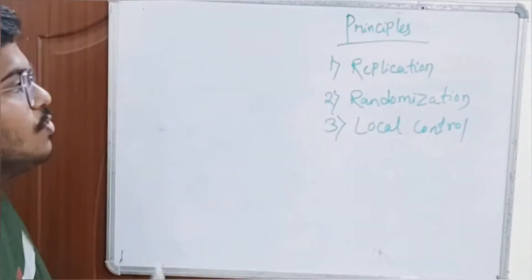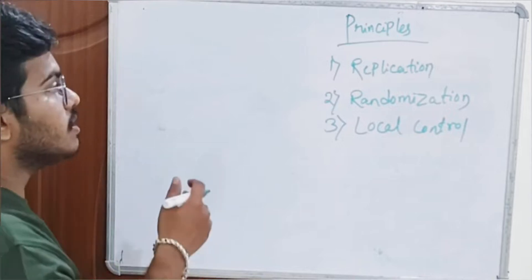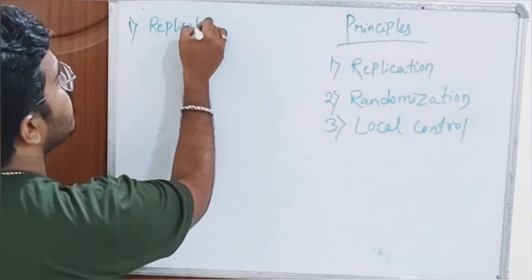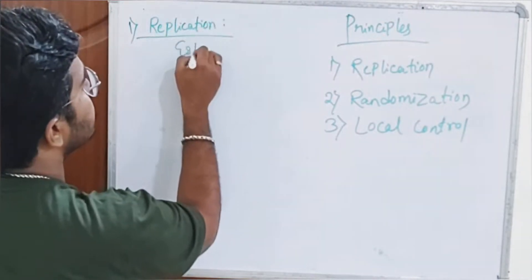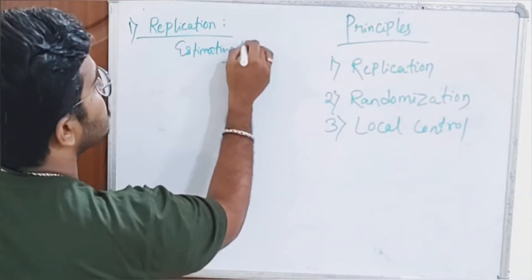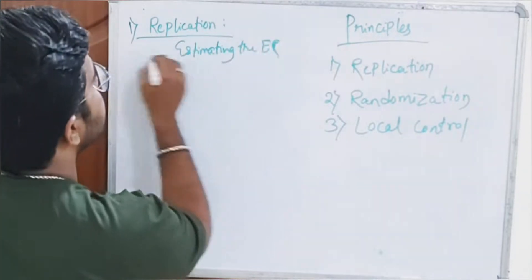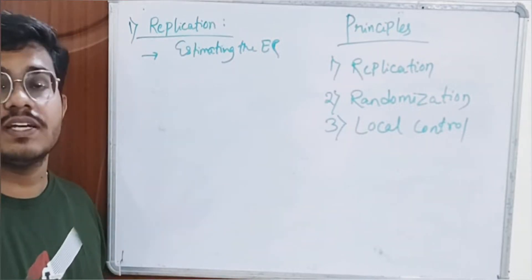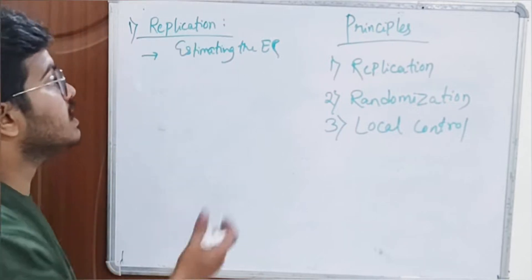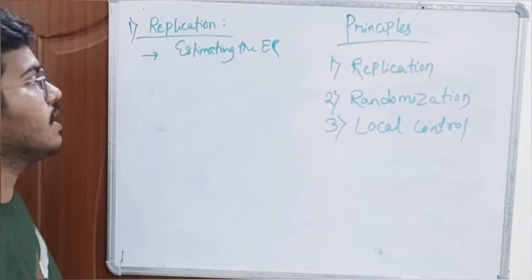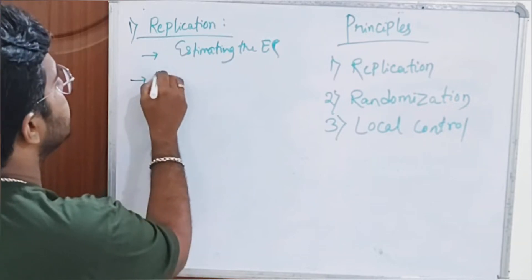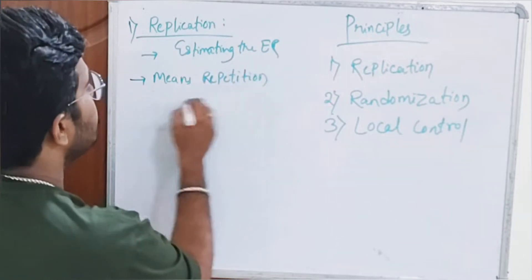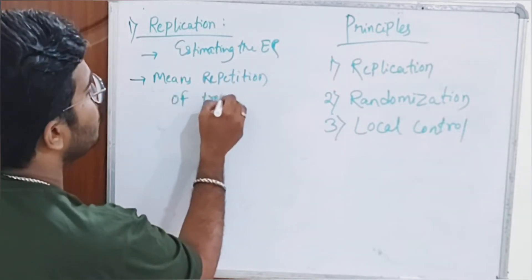Replication helps us in estimating the experimental error. We should remember that replication helps in estimating — it doesn't solve the experimental error or tell us the percentage of experimental error — but it helps in estimating it. Replication means repetition of treatments.